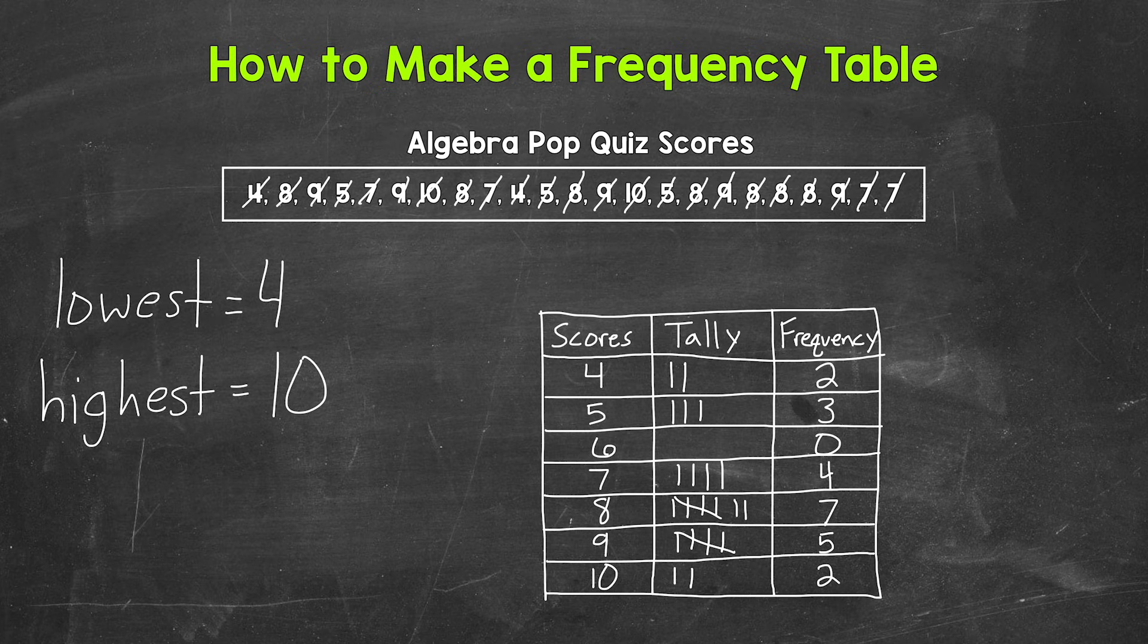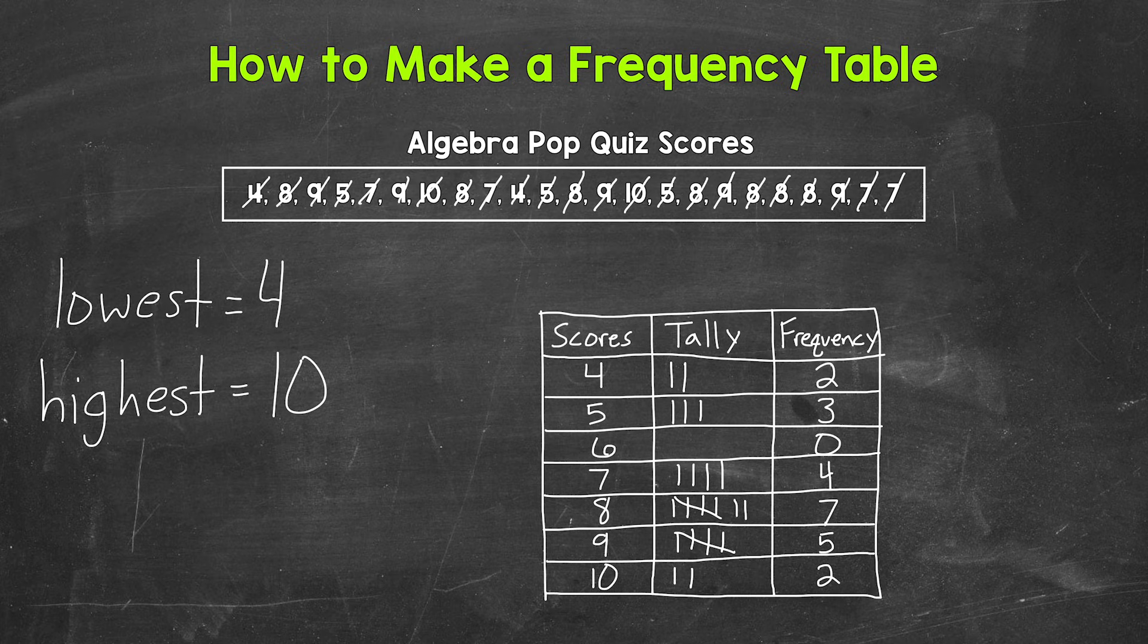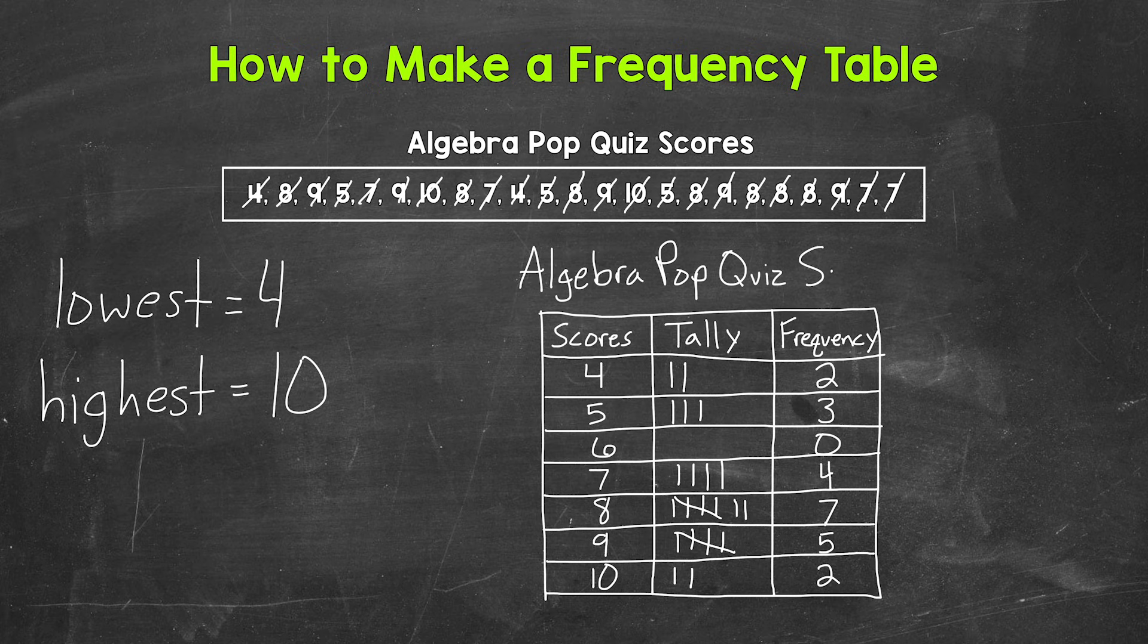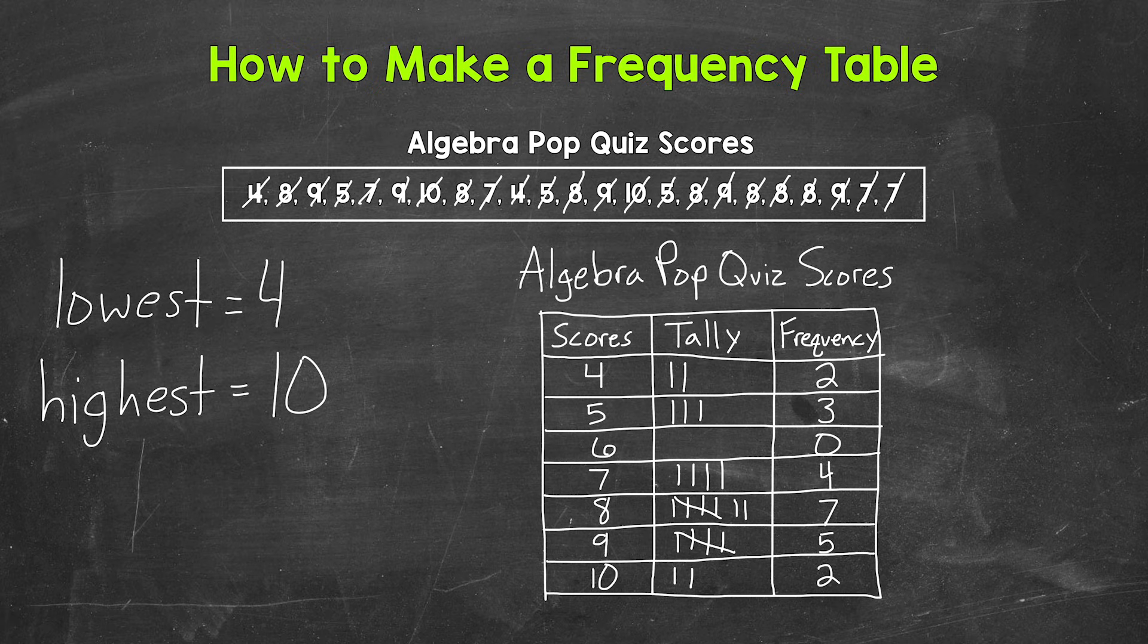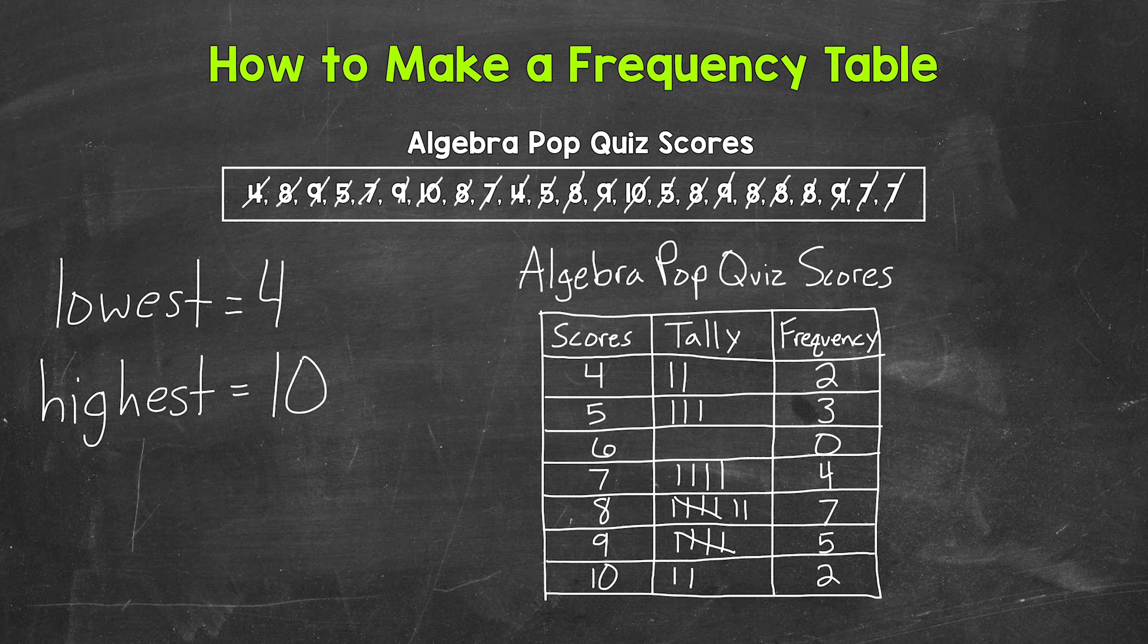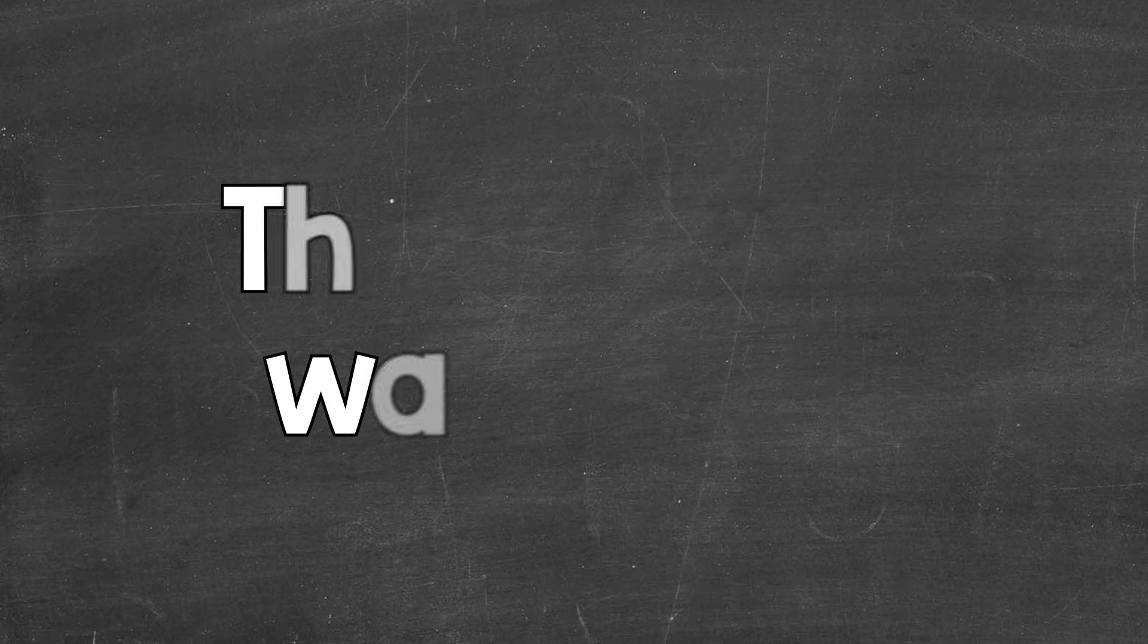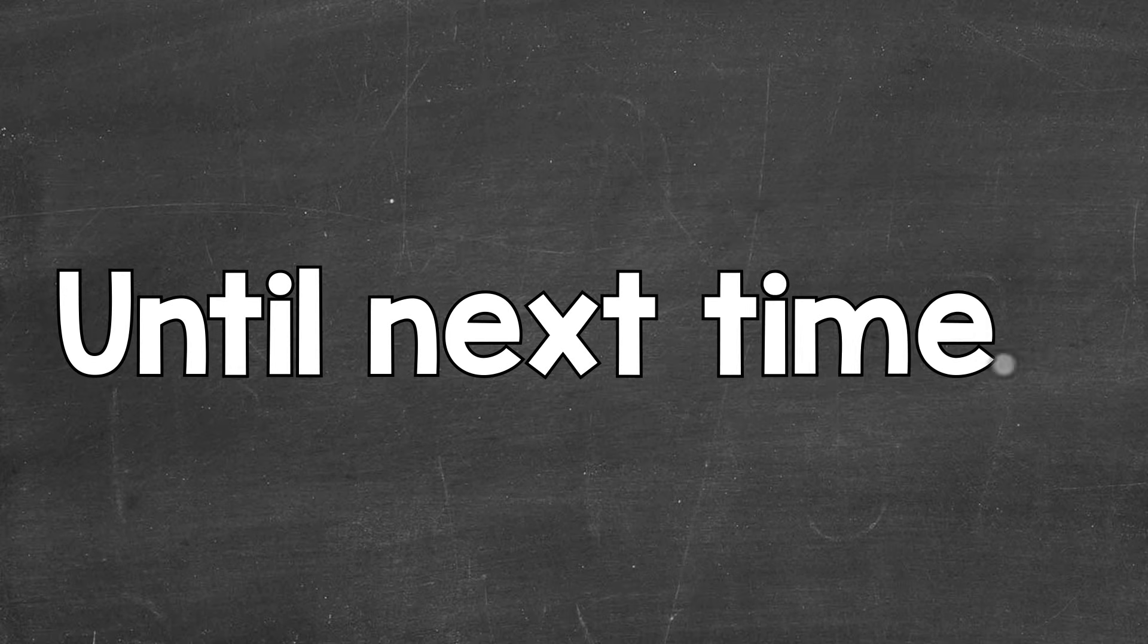And that's it as far as filling in the frequency table. Let's put a title up top here. So algebra pop quiz scores. So we took that original data and we organized it. We created a frequency table. So there you have it. There's how to make a frequency table. I hope that helped. Thanks so much for watching. Until next time, peace.